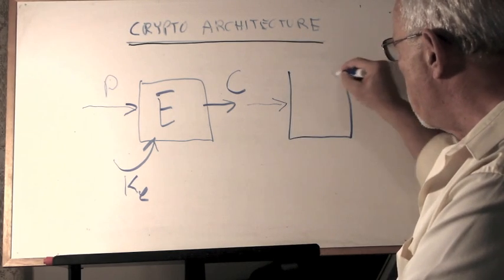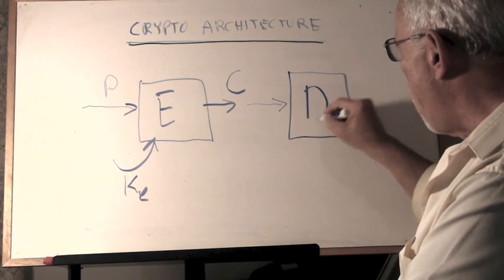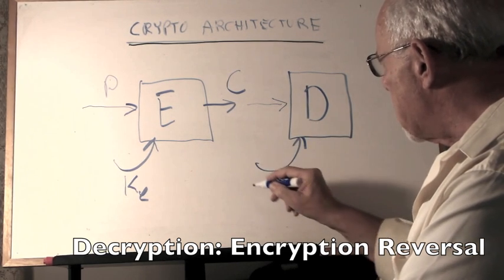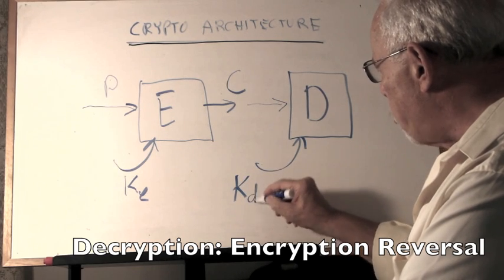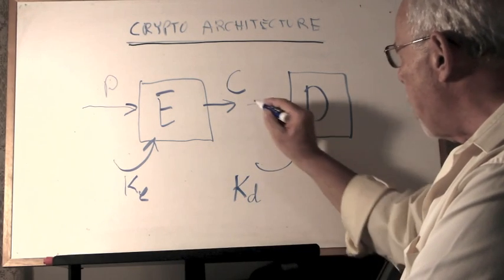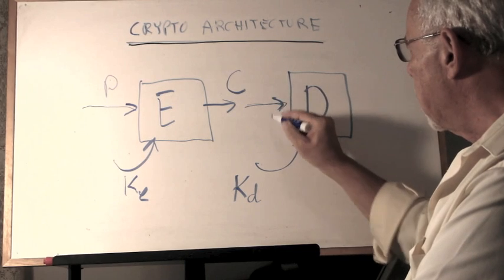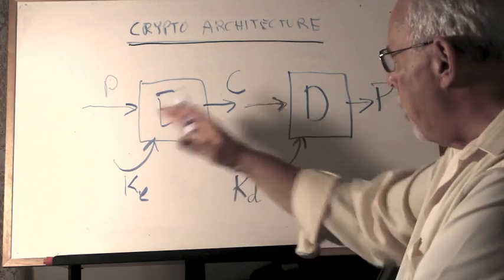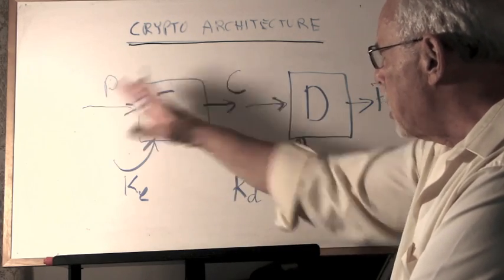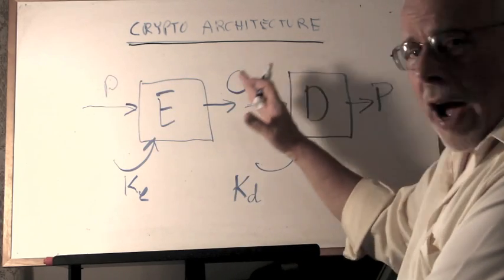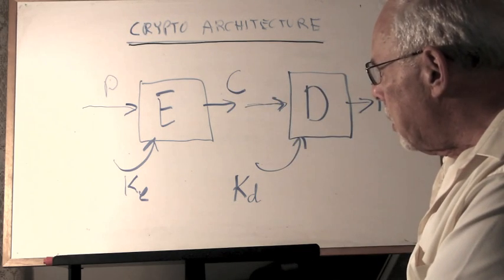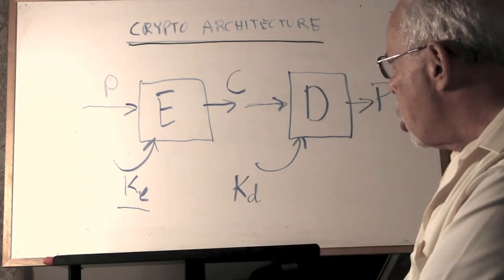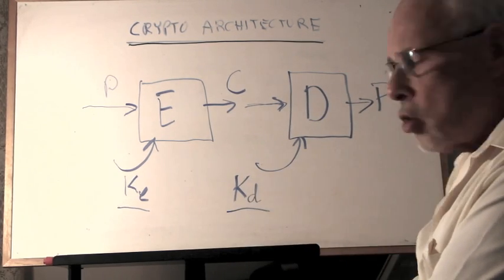Now the architecture continues with feeding eventually C into a decryption box, feeding to the decryption box a key, a decryption key, which together with C creates back the P. So what we have here is a complete cycle: plaintext to plaintext via ciphertext. To get the ciphertext we need an encryption key; to get the plaintext we need a decryption key.